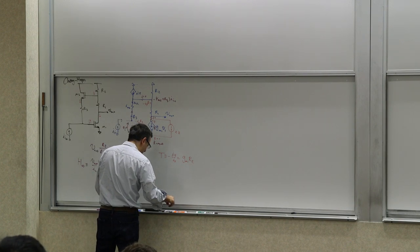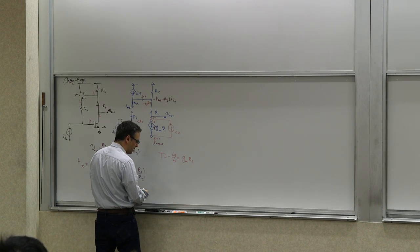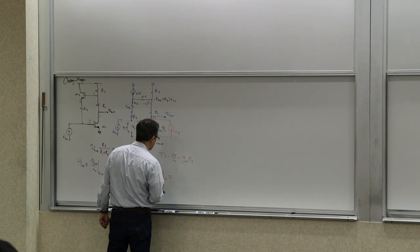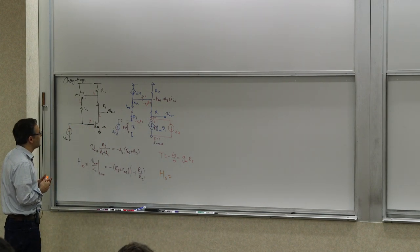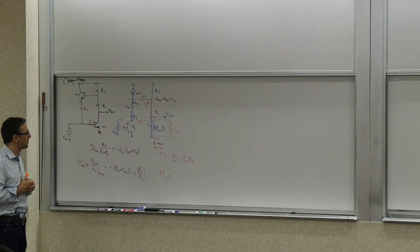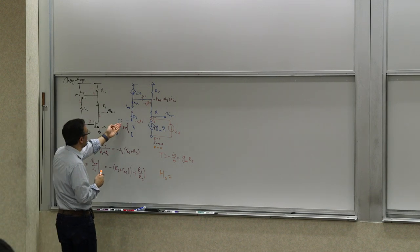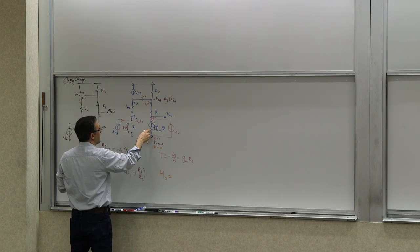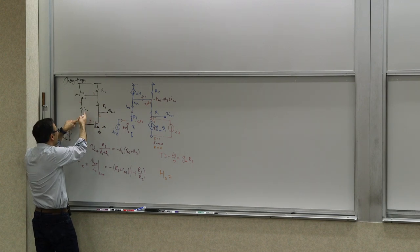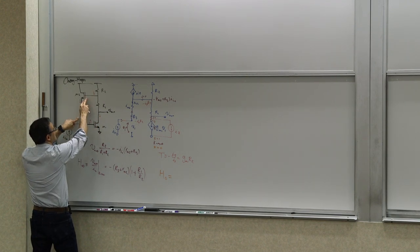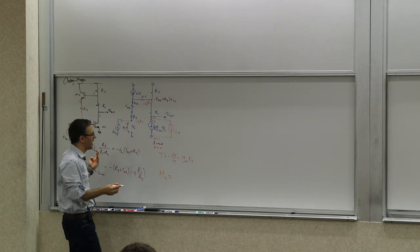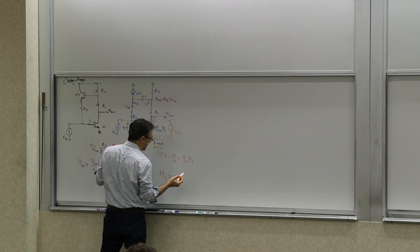The third parameter is the direct forward transfer H0. When K is set to zero, if we put a current at the input, at low frequencies nothing goes through because this current would be zero no matter what. There's no pathway, and since K is zero, the forward path is also killed. So H0 equals zero.